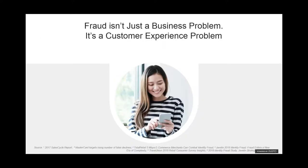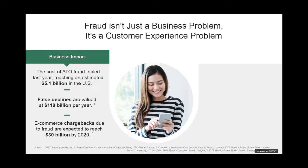Let's look at some of the impacts of this change. Fraud isn't just a business problem — it's a customer experience problem. Last year, the cost of ATO in the U.S. reached $5.1 billion across all industries. One of the more interesting stats is that false declines are valued at $118 billion per year. Those are customer insults — customers turned away because they were suspected of fraud and it turned out they weren't. That's a big problem for businesses and for customers who had a bad experience on your site while trying to transact.